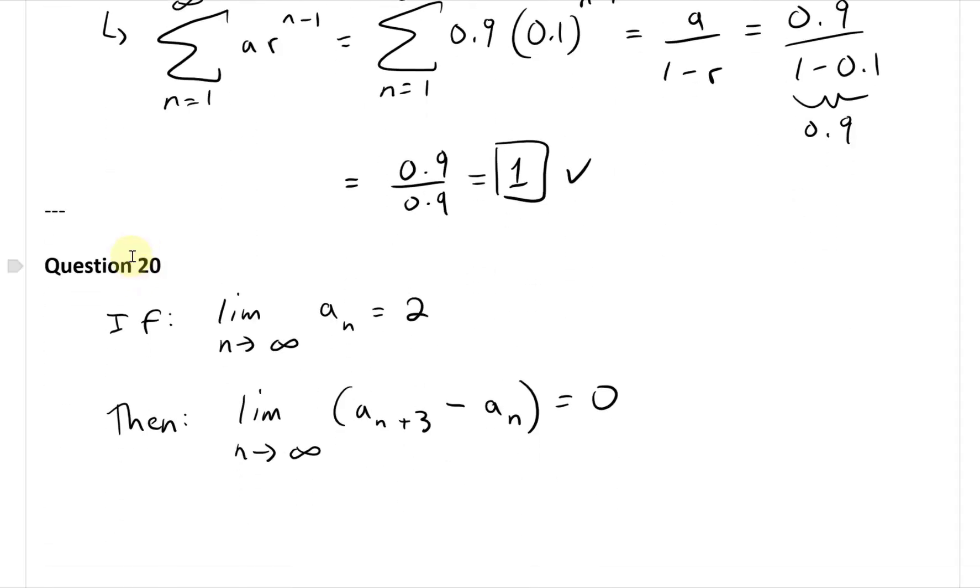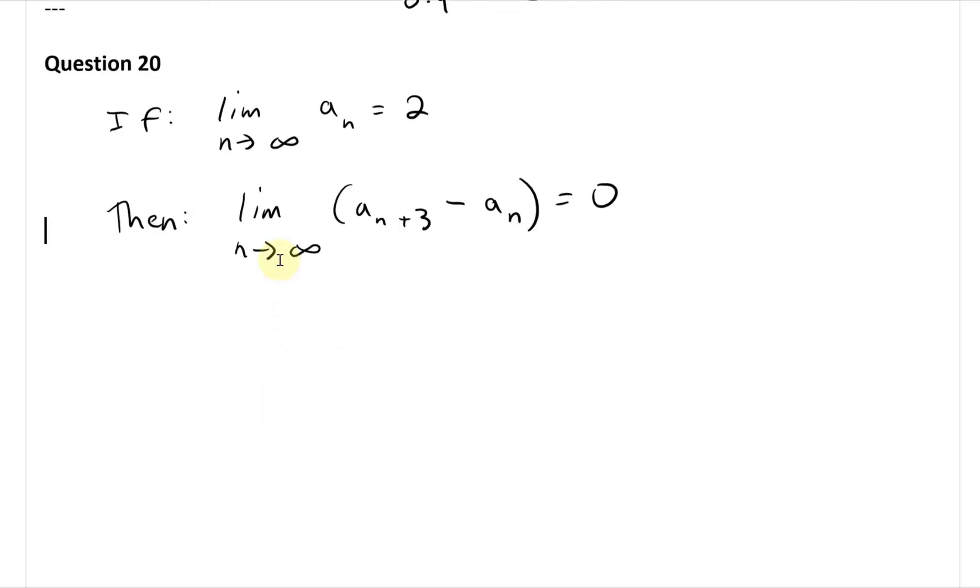Alright, so now let's continue further and look at question 20. This one asks, if the limit as n approaches infinity of a_n equals 2, then the limit as n approaches infinity of a_{n+3} minus a_n equals 0.